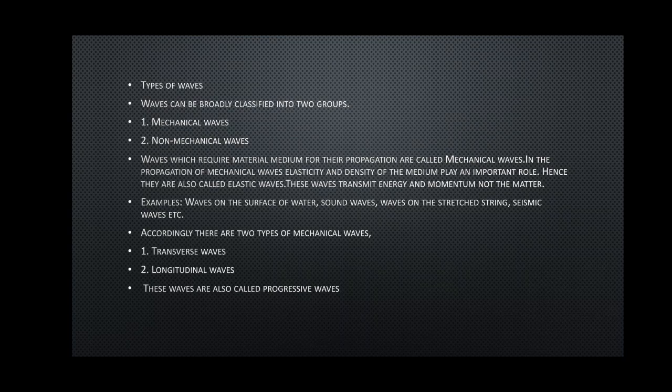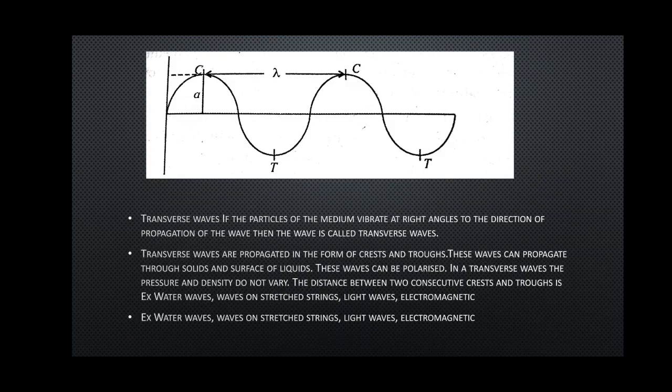Mechanical waves are divided into two types: transverse waves and longitudinal waves. Transverse means vertical; longitudinal means horizontal. These waves are also called progressive waves — they can propagate and move from one region of space to another, and energy transfer takes place. The diagram of mechanical waves shows A for amplitude and distance lambda.